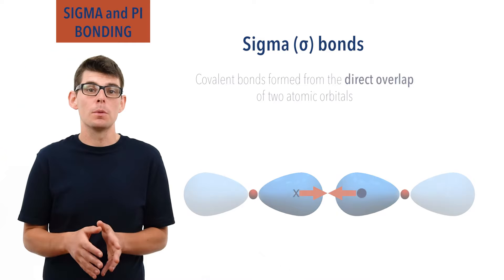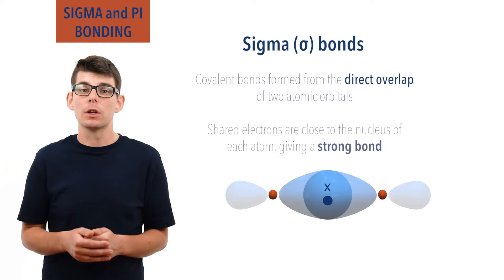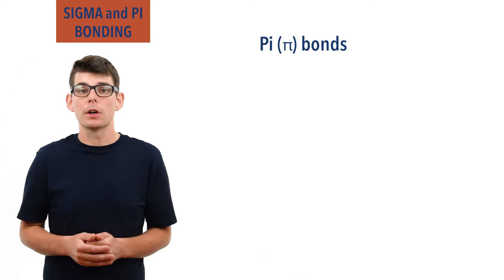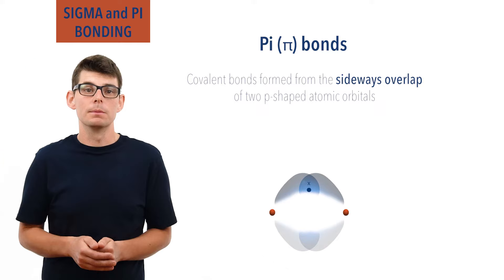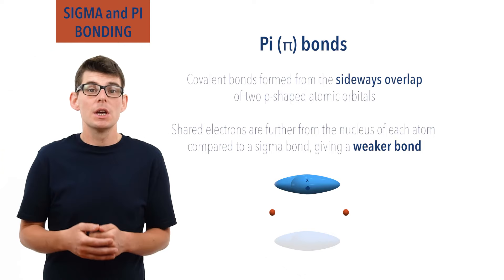Sigma bonds are covalent bonds that form from the direct overlap of two orbitals from two atoms; electrons in the bond are close to the nuclei of both atoms and the bond is strong. Pi bonds are covalent bonds that form from the sideways overlap of two P-shaped orbitals from two atoms. Electrons in the pi bond are further from the nuclei of both atoms and as a result, pi bonds are weaker than sigma bonds.